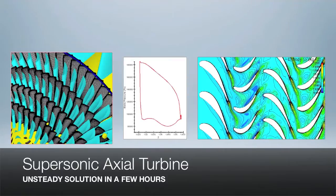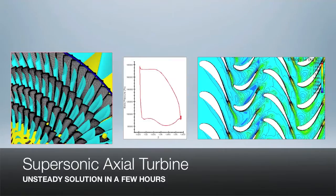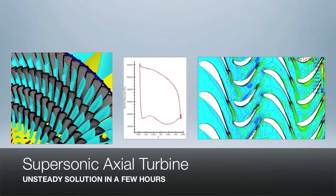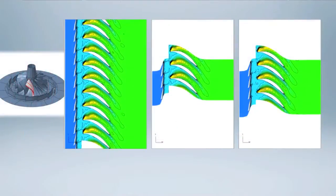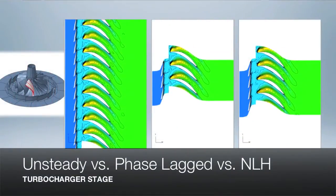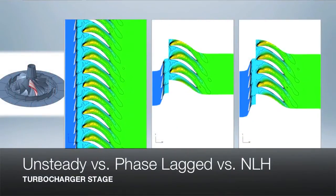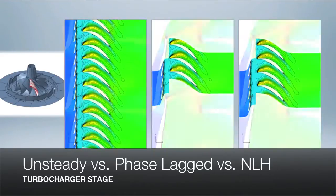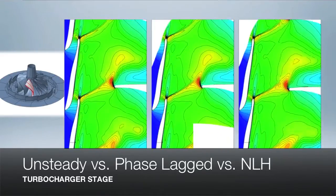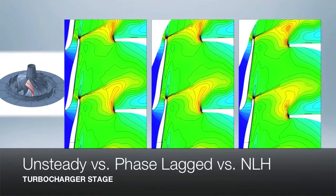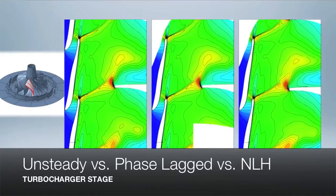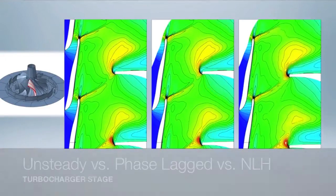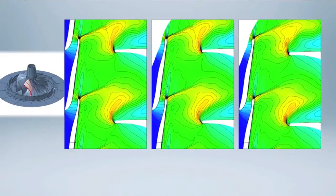This case is a supersonic axial turbine which we resolve in a few hours on 12 cores. This is a validation exercise done on the basis of a turbocharger turbine stage, where we compared the NLH results to a full unsteady 360-degree analysis. We can see a very close match, including the shock structure.